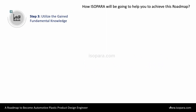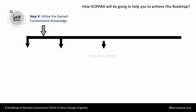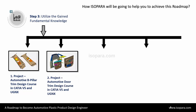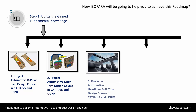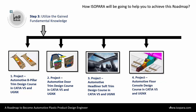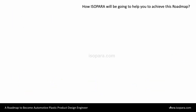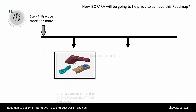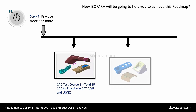Then for step 3, the courses are: Project of Automotive B-Pillar Trim Design Courses in CATIA and Unigraphics, Project of Automotive Door Trim Design Courses in CATIA and Unigraphics, Project of Automotive Headliner Soft Trim Design Courses in CATIA and Unigraphics, Project of Automotive Floor Console Design Courses in CATIA and Unigraphics, and many more.